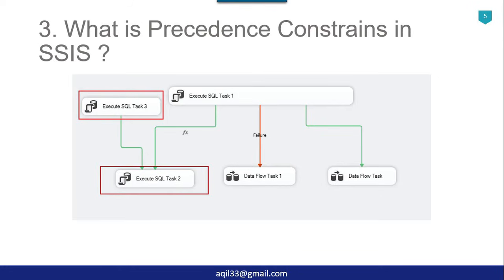We can also use expressions in precedence constraints. After the execution of the first task, the expression will be evaluated. You can use SSIS variables in the expressions and based on the result of the expression, the next task will be executed. If you want to learn more about precedence constraints in detail, I will share the link to the video in the description of this particular video.